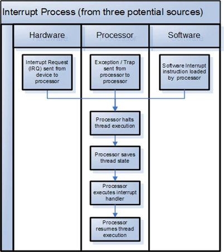In system programming, an interrupt is a signal to the processor emitted by hardware or software indicating an event that needs immediate attention. An interrupt alerts the processor to a high priority condition requiring the interruption of the current code the processor is executing.